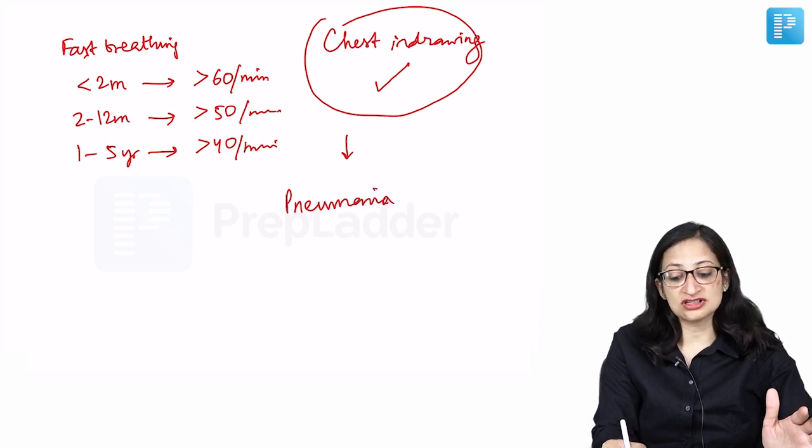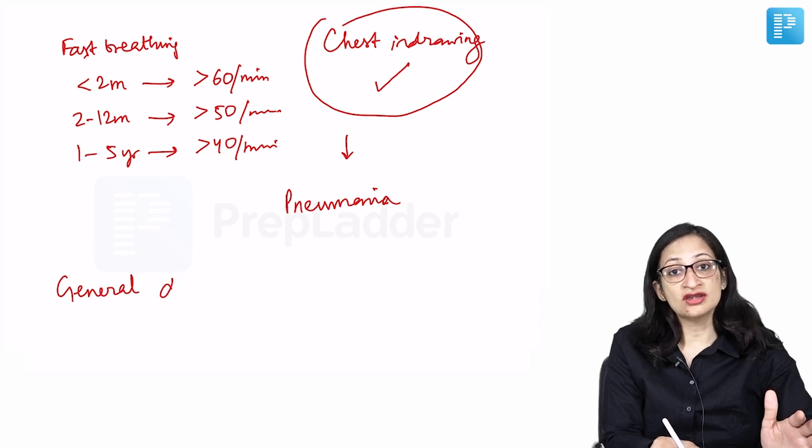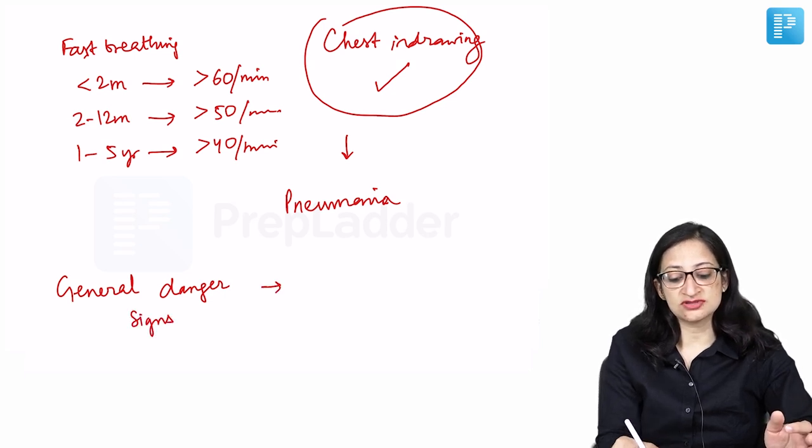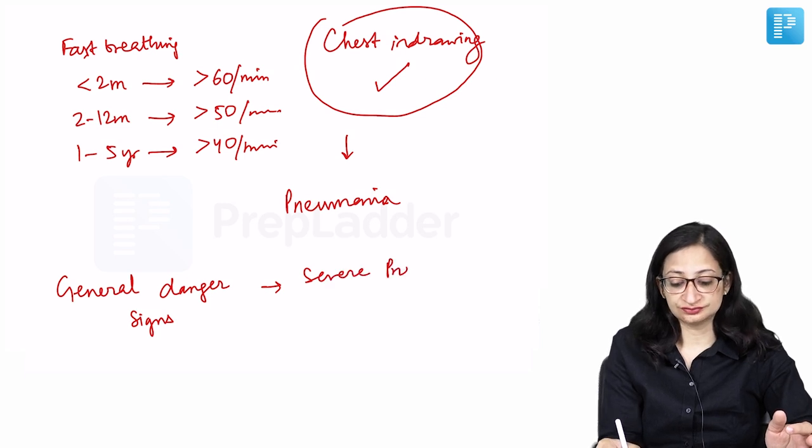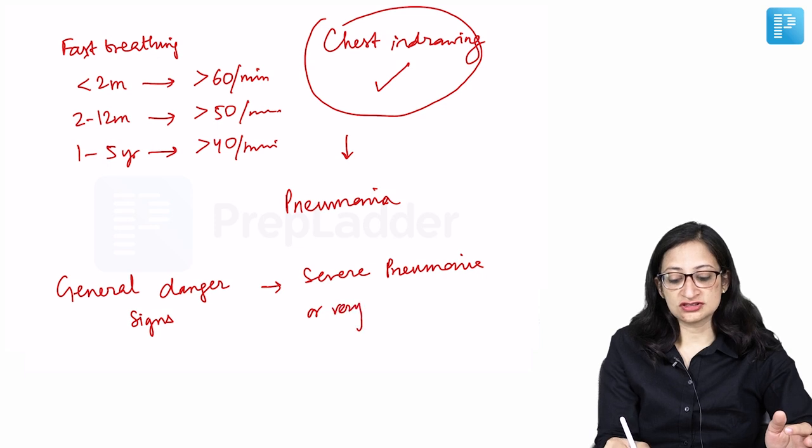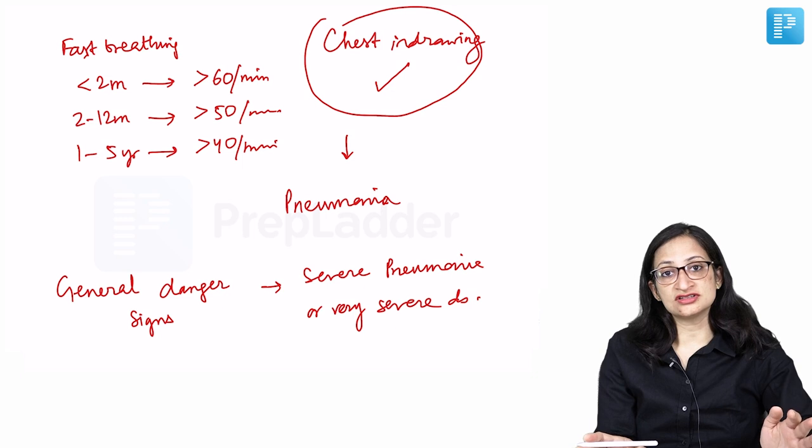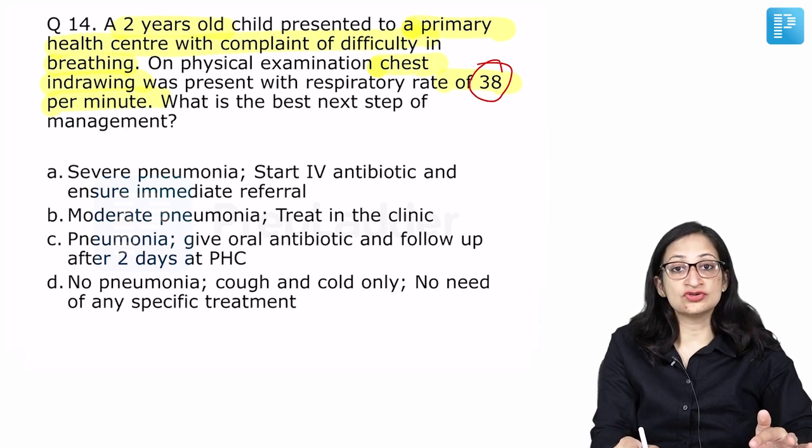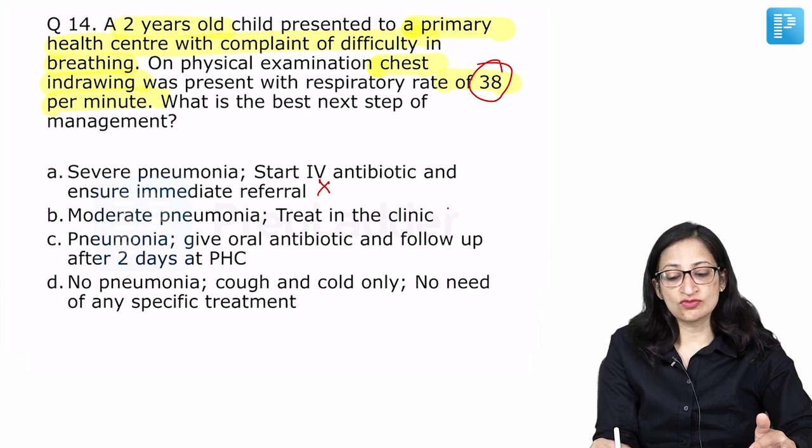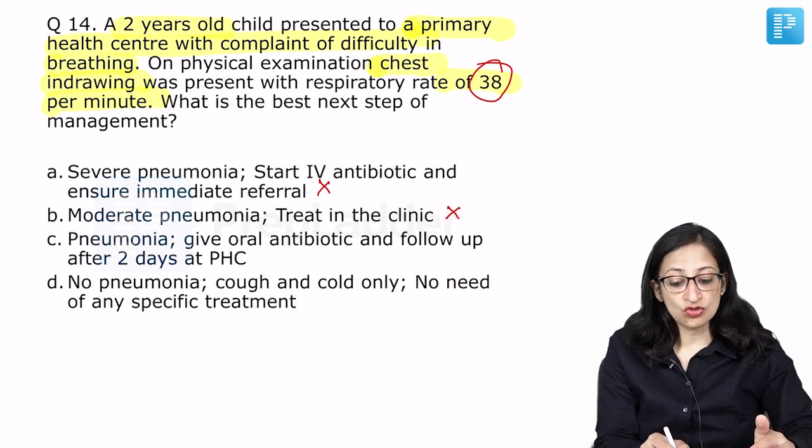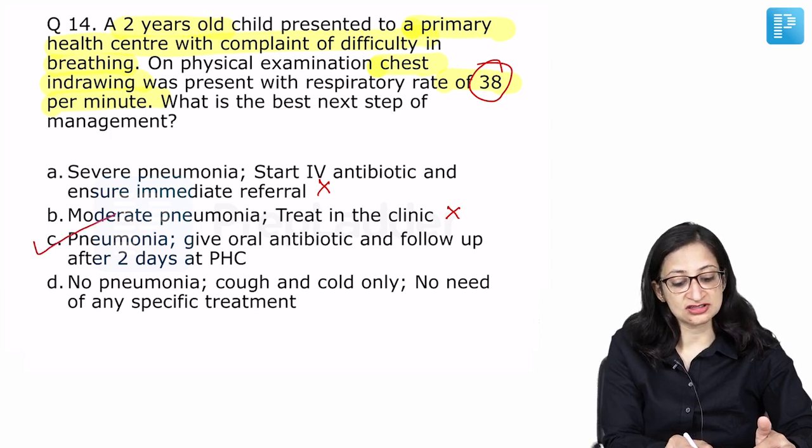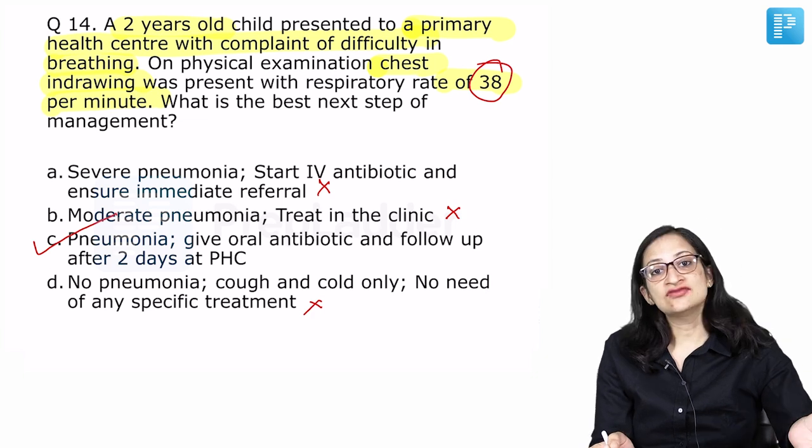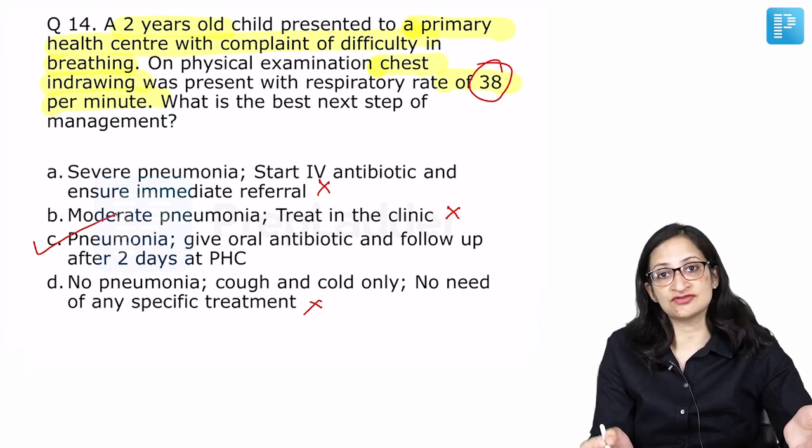If irrespective of whether fast breathing is present or not, if there is chest indrawing present, then the child will be classified as having pneumonia. And if any of the general danger signs are present, like if the child is not feeding or having convulsions or is lethargic and dull or unconscious, if any of the general danger signs are present, then this becomes severe pneumonia or very severe disease. In the given case scenario, no general danger sign is mentioned. So, our diagnosis in the given case scenario is pneumonia. This is not severe pneumonia. So, we do not need to start IV antibiotics and refer the child. There is nothing called moderate pneumonia. Pneumonia, give oral antibiotics and follow up after 2 days at PHC is the best answer out of the given options. If there is severe pneumonia or very severe disease, we need to start IV antibiotics and refer the child.